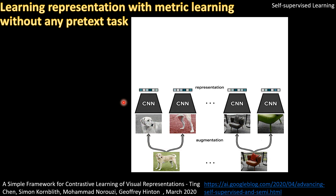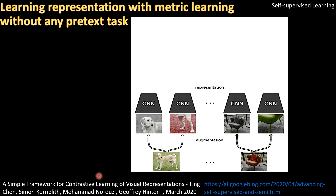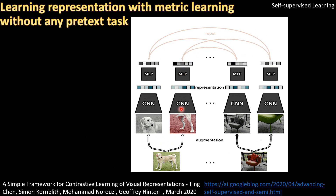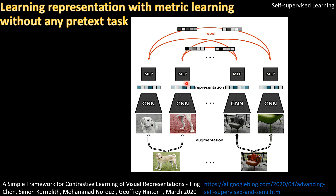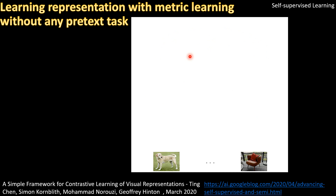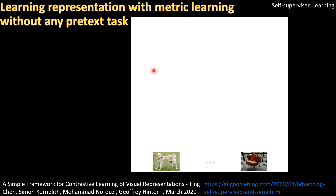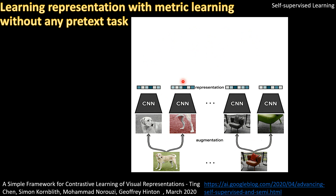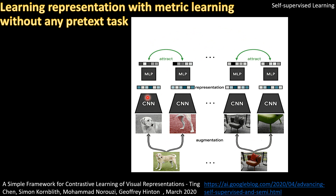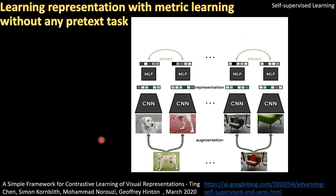It's not necessary that you always design a pretext task. This paper from early 2020 introduces contrastive learning, a kind of metric learning where you take an image and some random augmentation of it — for example, a random crop of a dog — and the network must predict whether the features of the random crops are from the same image. If they are from the same image, those features should attract (distance should be small); if they come from different images, they should repel. This way the model learns representations about the data.